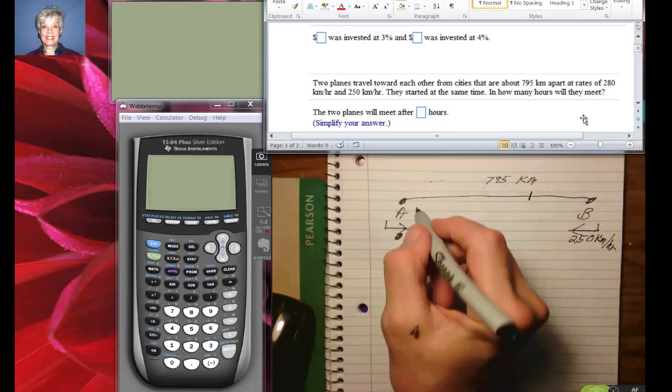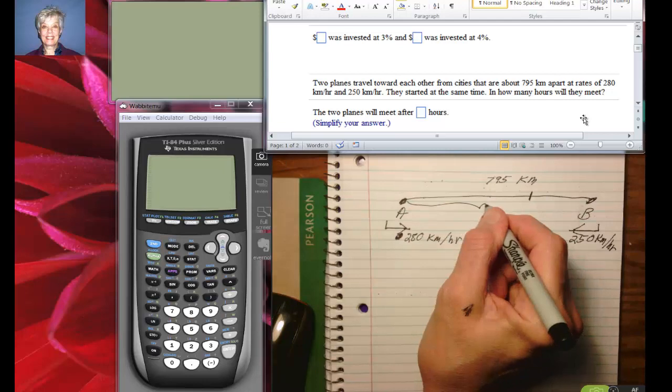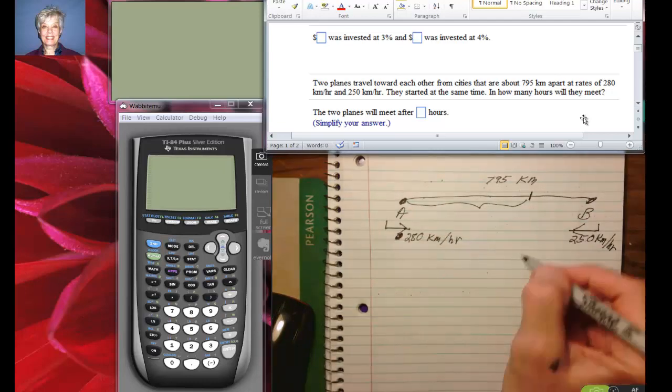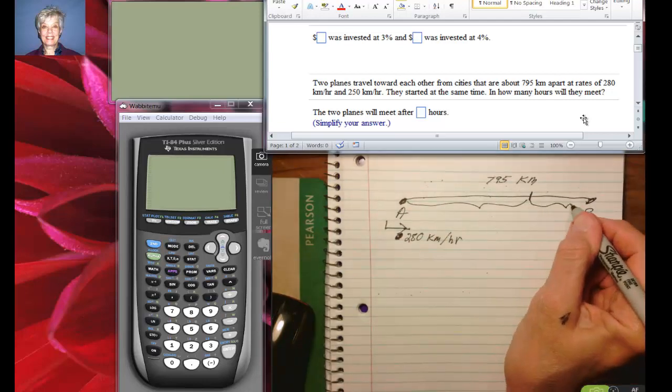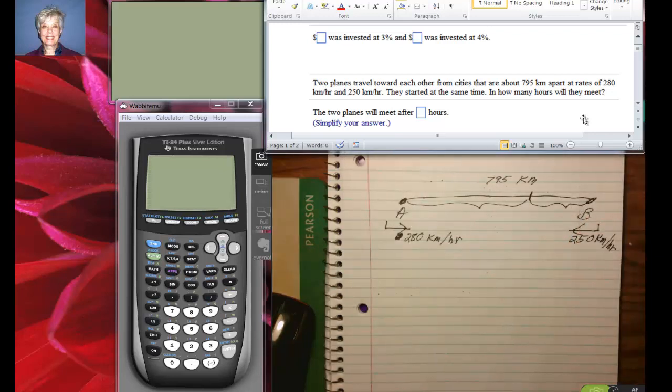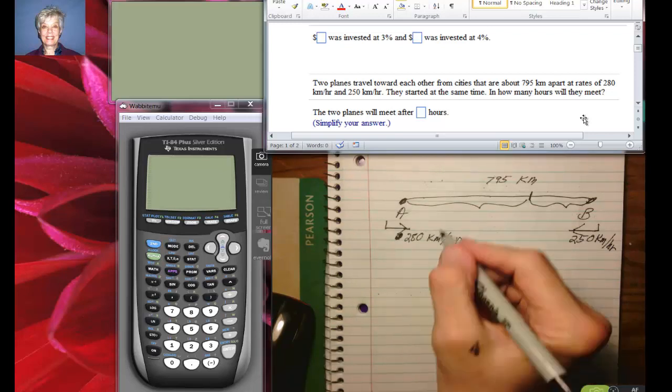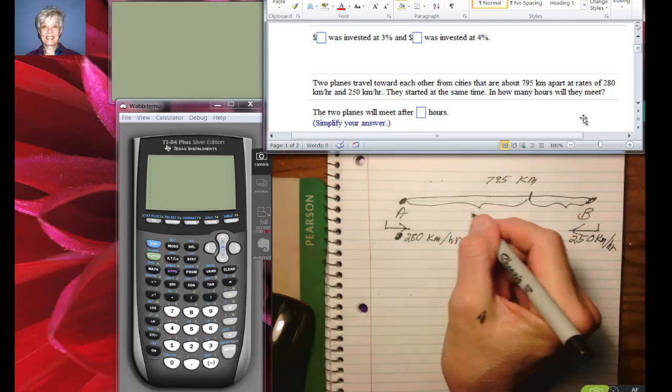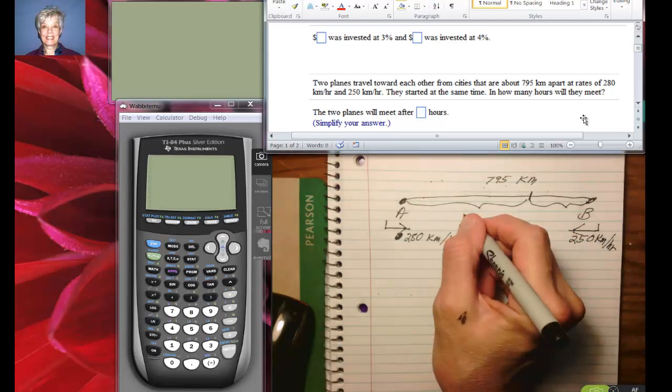Let's say that this is the distance that plane A went, and this is the distance that plane B went. All right, now what do we know? Well, we know that rate times time equals distance, and we know that they're going to travel an equal amount of time. So we know that this distance right here is going to be 280 kilometers per hour times the time traveled.